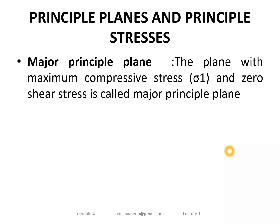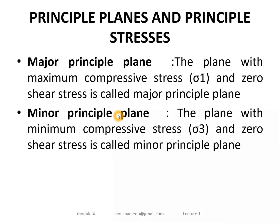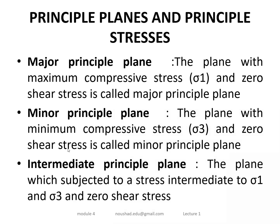The maximum compressive stress on the major principal plane is represented as sigma_1, the major principal stress. The minor principal plane is the plane where the shear stress is zero but the normal stress is minimum, represented as sigma_3, the minor principal stress. In between sigma_1 and sigma_3, there is an intermediate principal plane.